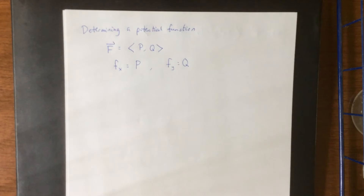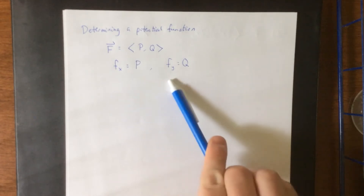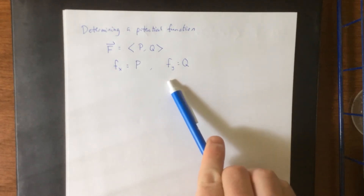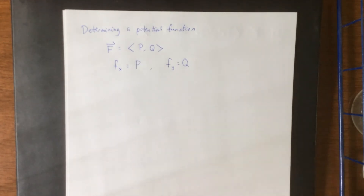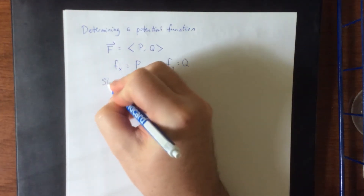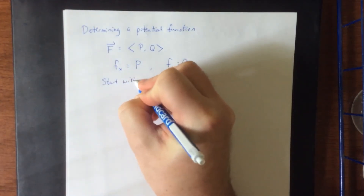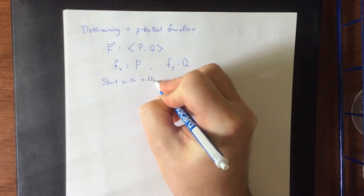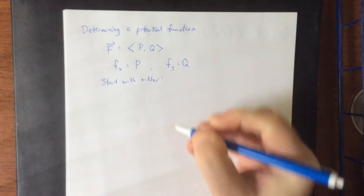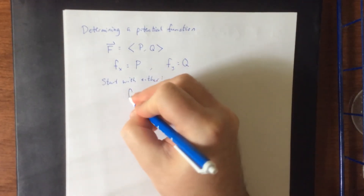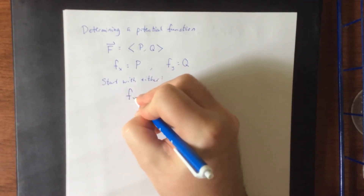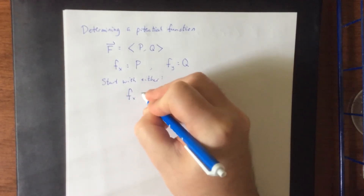The way that we're going to determine what the original function is: we know the partial derivatives of the original function, and if we know partial derivatives, then integrating should take us back to the original function. You're allowed to start with either one of these; eventually we're going to use both of them. So without loss of generality, let's start with the first one.